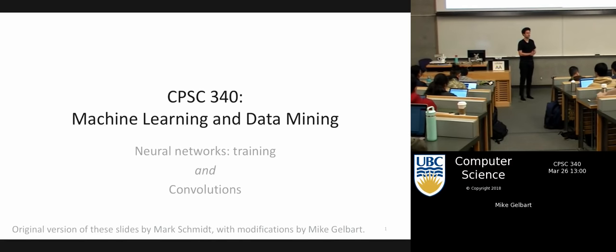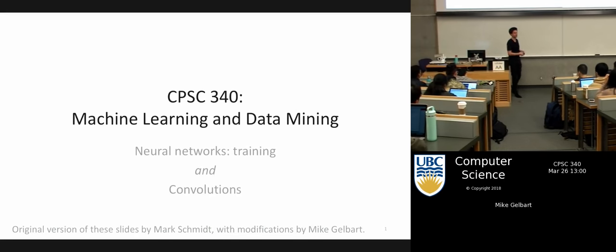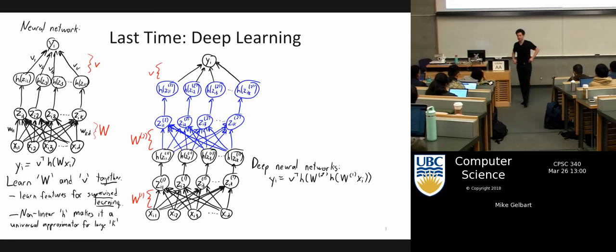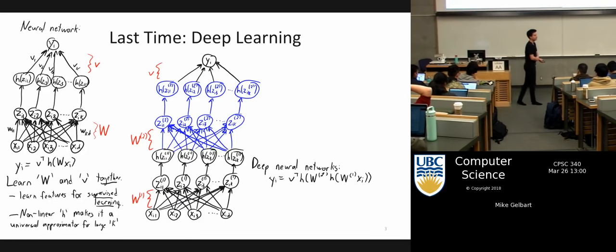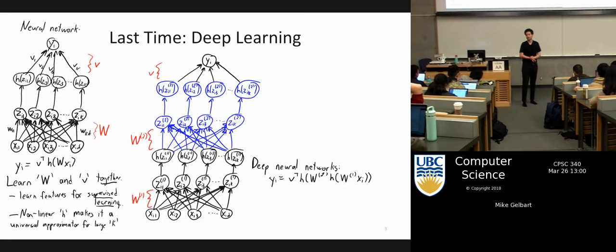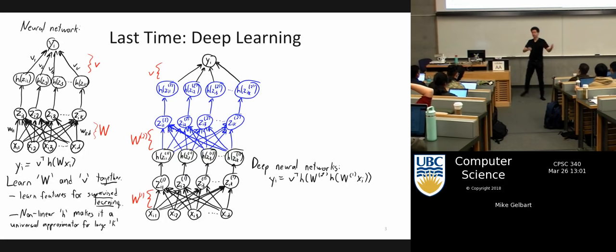Let's get started. Today we're going to continue talking about neural networks, and then hopefully if we have enough time, we're also going to cover convolutions. What we talked about last time was this idea of neural networks being some kind of strange, recursively defined function that you can learn the parameters of and do a good job of supervised learning for. Deep learning was essentially just another name for neural networks, meaning you have a bunch of layers where you multiply by a matrix, do the non-linearity, and multiply by a matrix and so on.